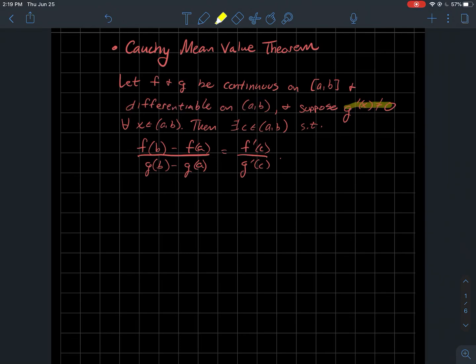and suppose that g prime is never zero as long as x is between a and b, then there should exist some point c between a and b such that the following holds: f of b minus f of a divided by g of b minus g of a should be equal to f prime of c over g prime of c.